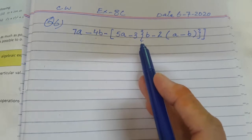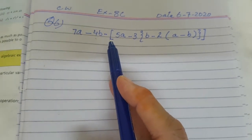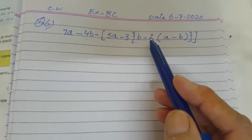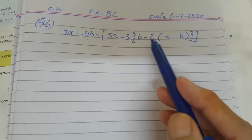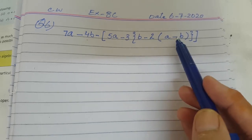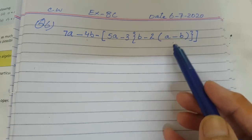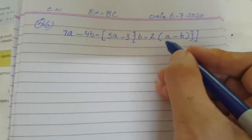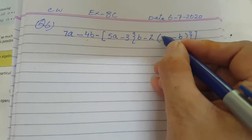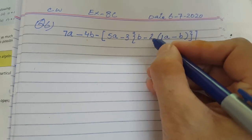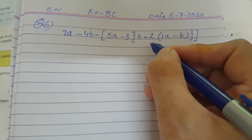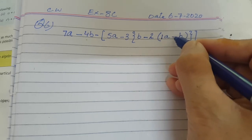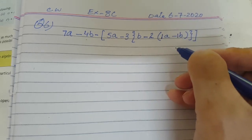The outer sign and number with the parenthesis is minus 2. You have to multiply the sign with the sign of each term inside, and you take out both the unlike terms out of the bracket. You also have to multiply 2 and 1. The coefficient of a is 1. The outer number 2 is with a negative sign, so you will multiply 2 with the coefficient 1.